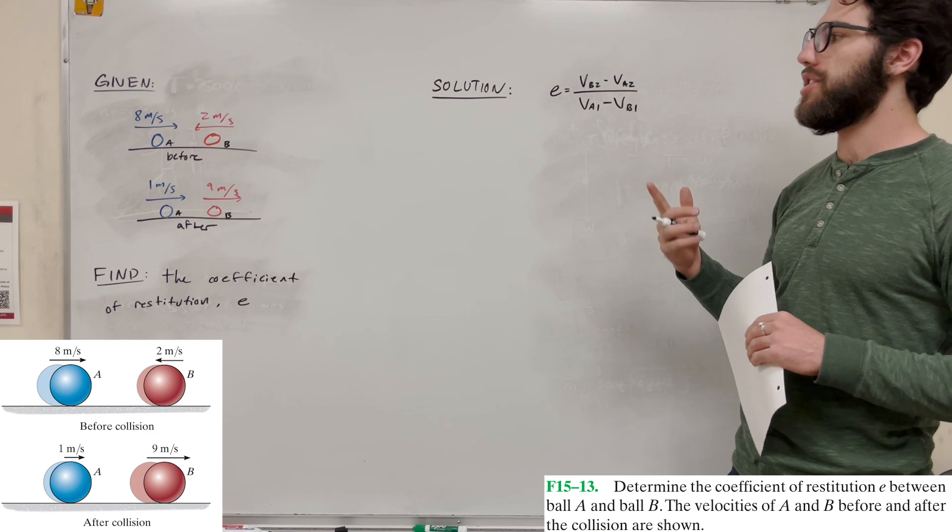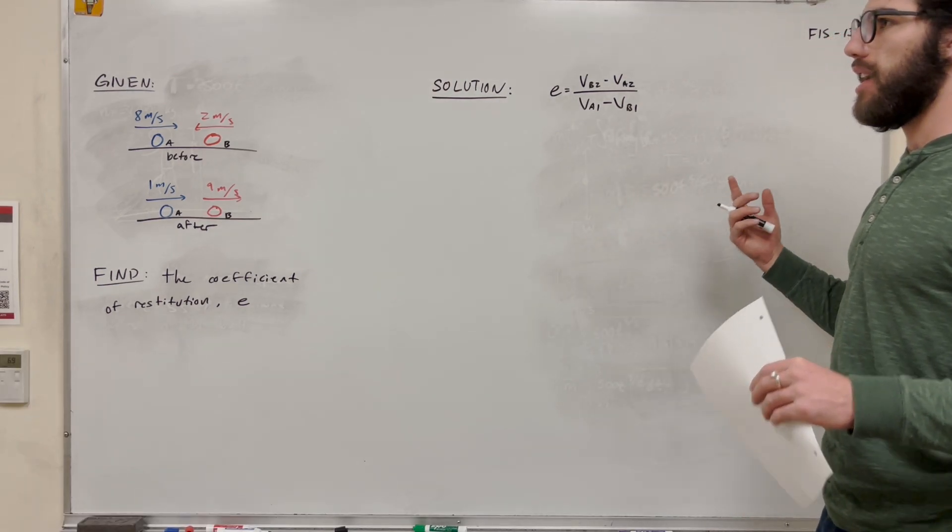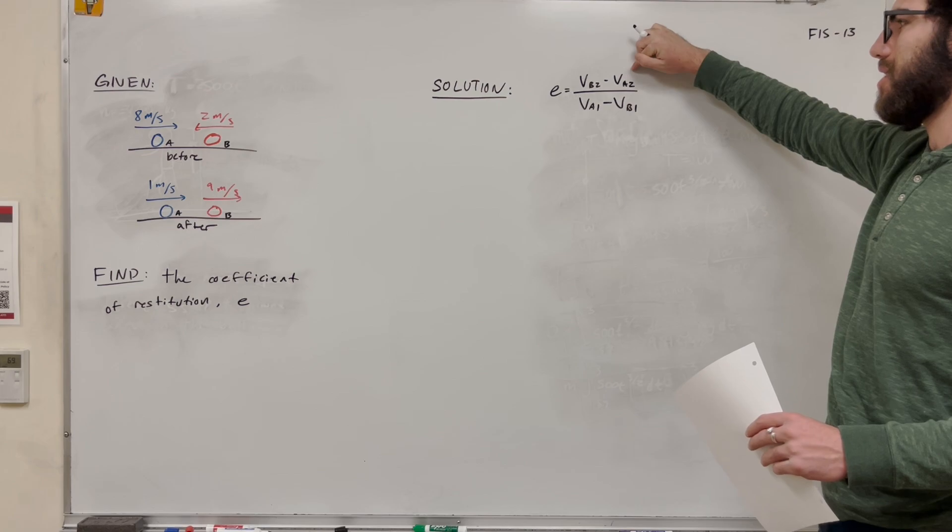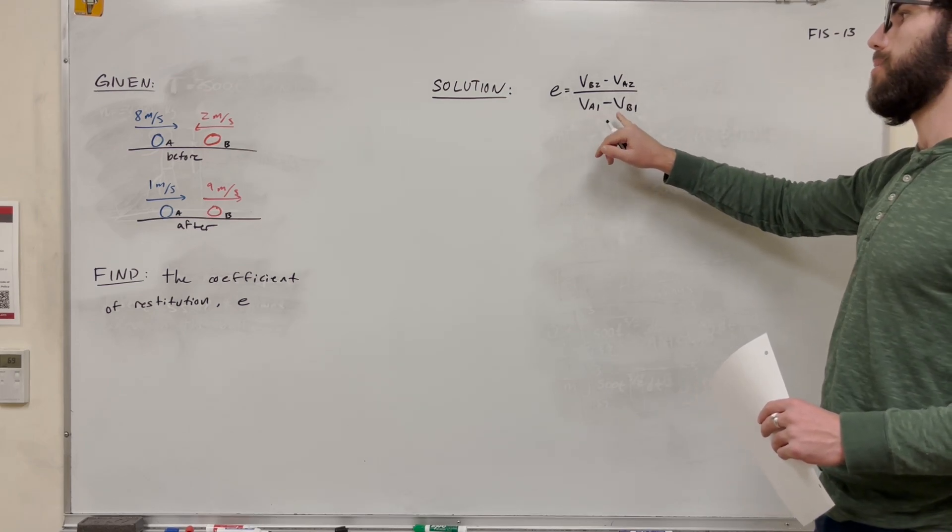So this is the equation for the coefficient of restitution. Analyze it. Remember it, because you're going to need it. Velocity b2 minus velocity a2. But then on the bottom, it's velocity a1 minus velocity b1.